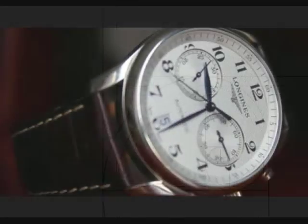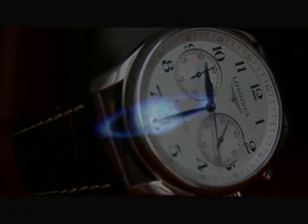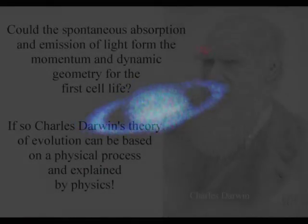Saturn's rings have been formed over a period of time and Darwin's theory of evolution is a process over a period of time.